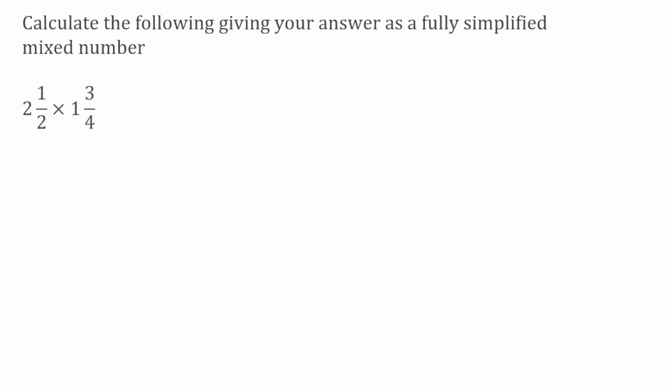So for this first question, I've got 2 1/2 multiplied by 1 3/4. To start with, we're going to turn these mixed numbers into improper fractions. The way we do that is we take the denominator of the fraction part, we multiply it by the whole number part, and then we add on the numerator of the fraction.